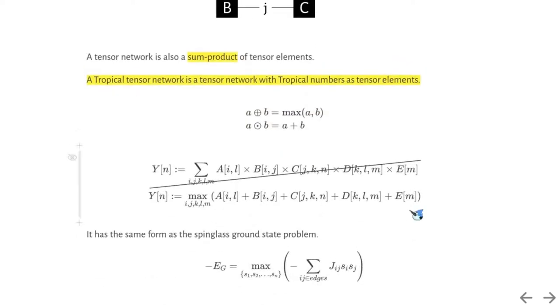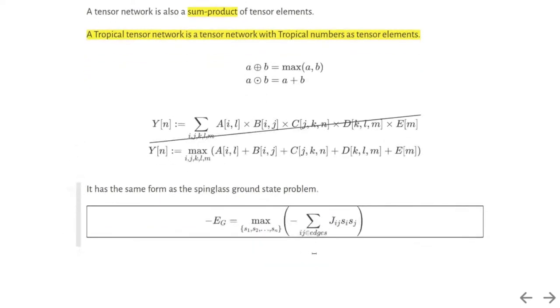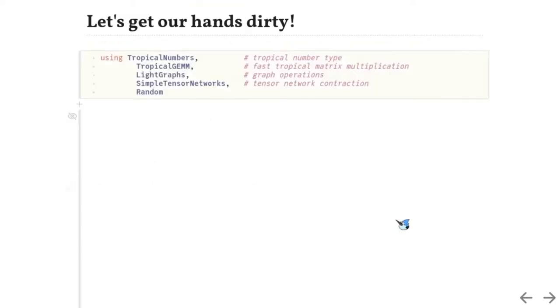The multiplication is redefined as a plus. Now, the tensor network contraction becomes a max plus network. Interestingly, it has the same form as the spin-glass ground state problem that we want to solve. Notice that if we put a minus sign before the energy function, the minimization becomes the maximization.